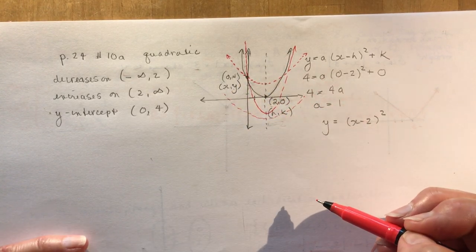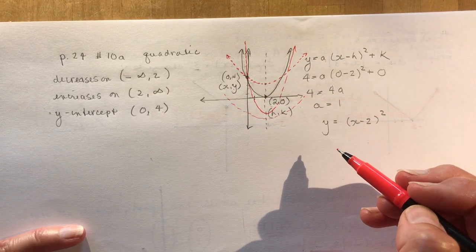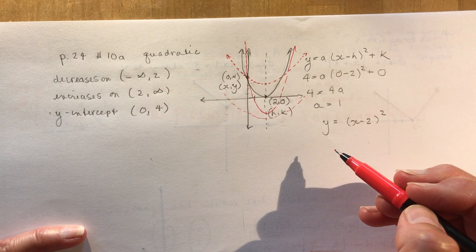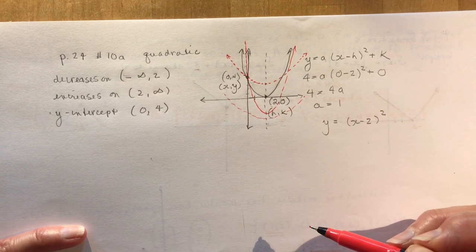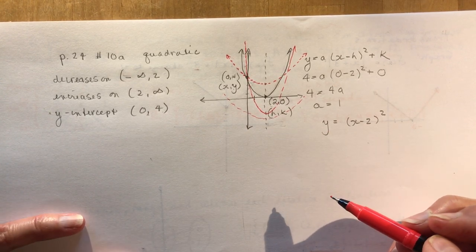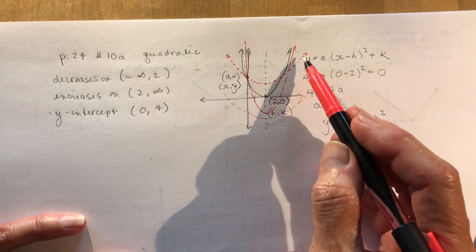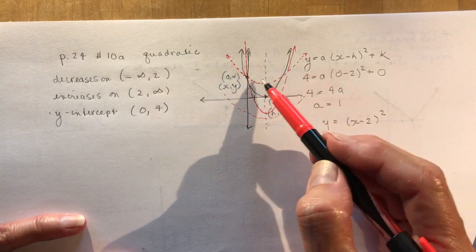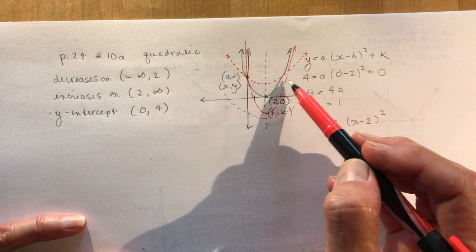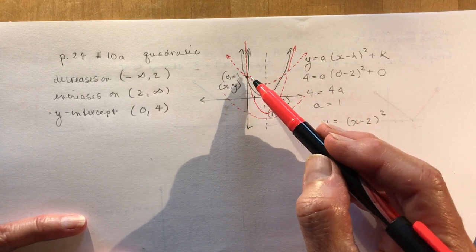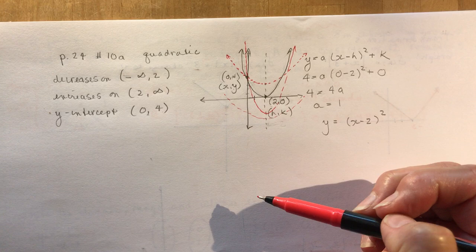So you have all kinds of different equations. And it says, is there only one function that has the characteristics given in part A? And your answer would be no. There could be a number of different ones with different a values, right? So different compressions or stretches with the same y-intercept.